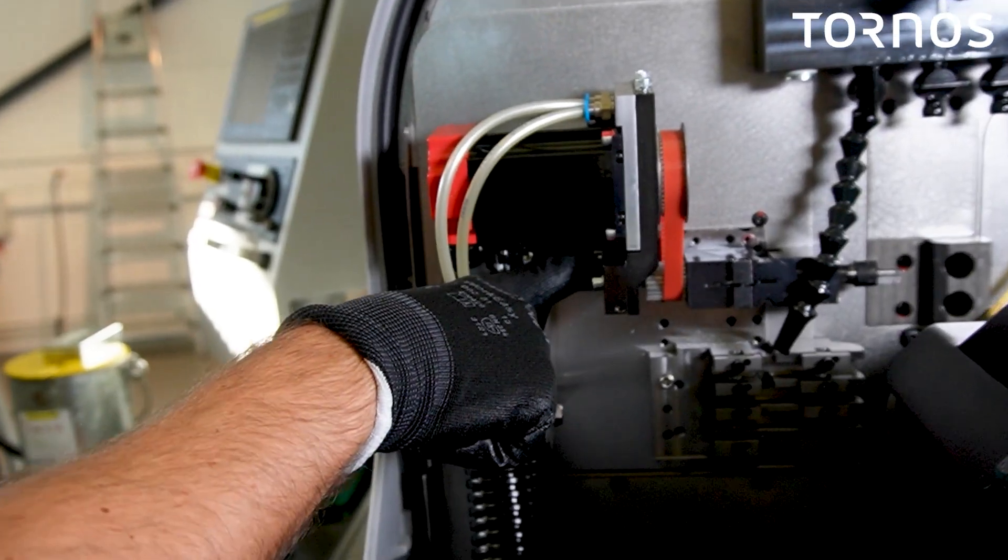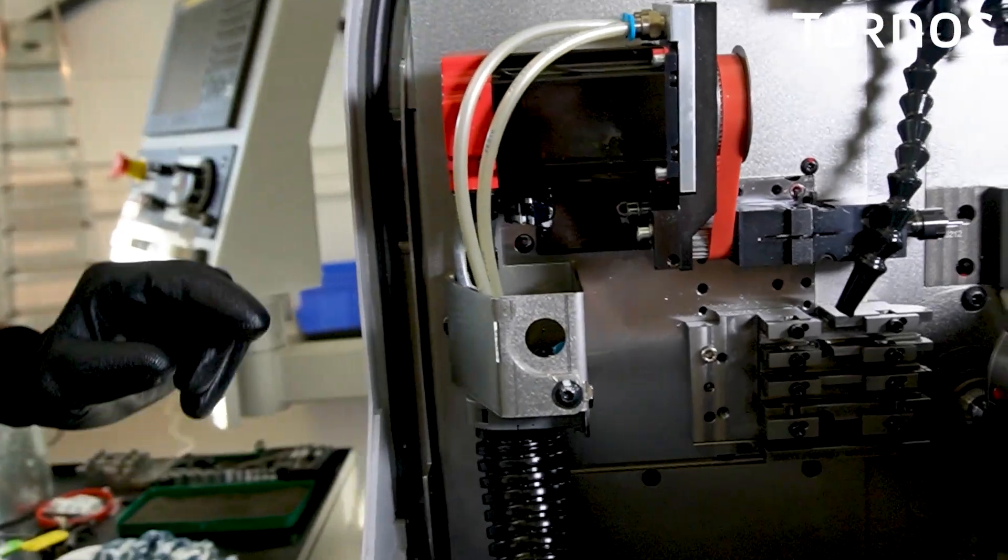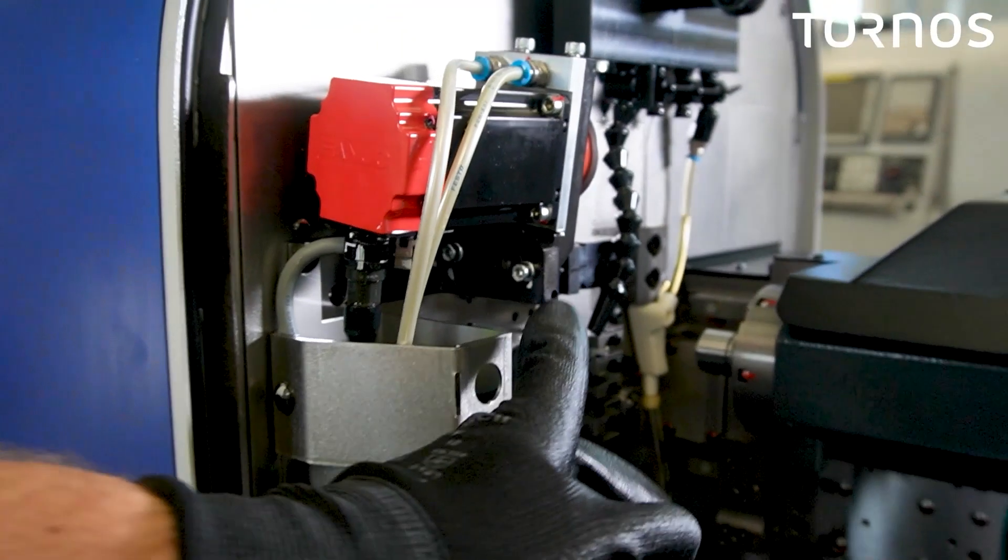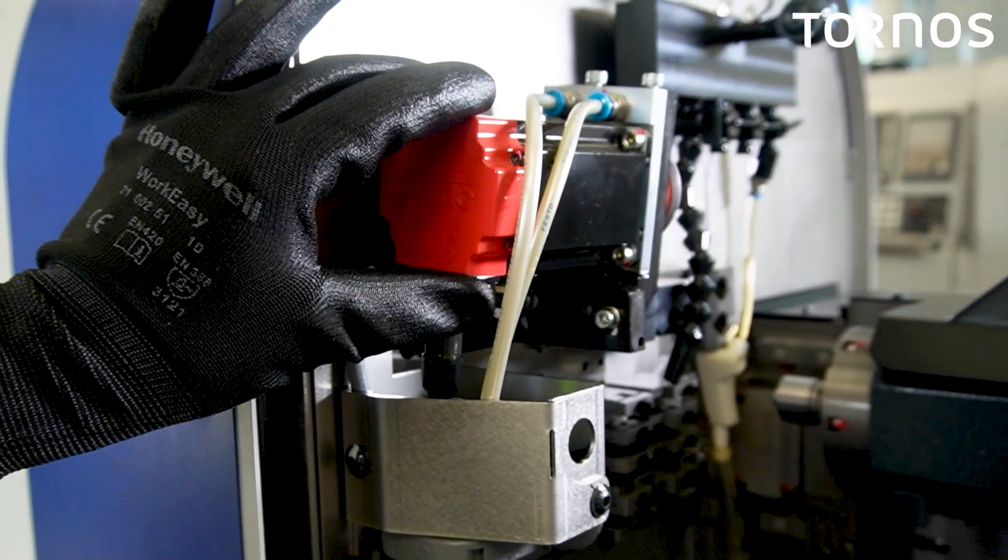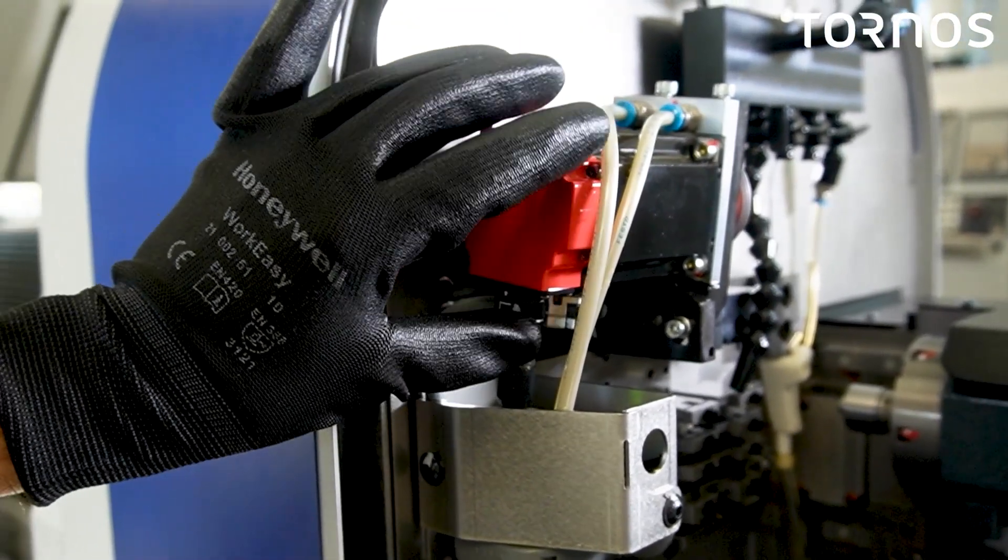The motor support can rotate on its pivot point. This allows you to adjust the tension. You need to loosen the two screws that lock the motor support in position. Then you will be able to rotate it.